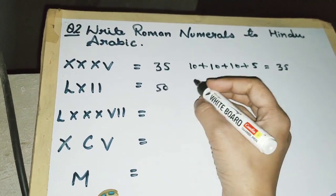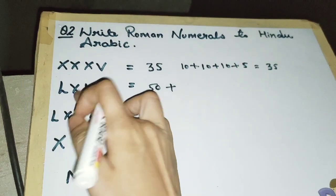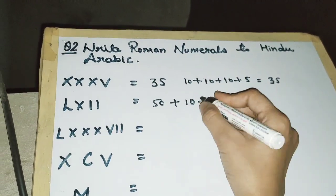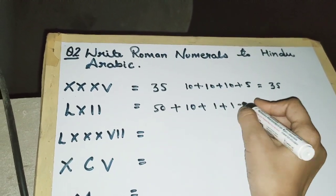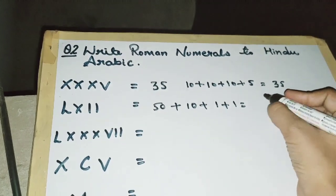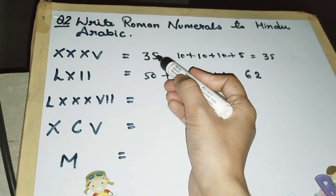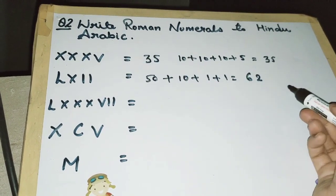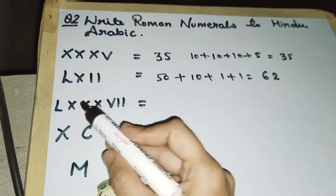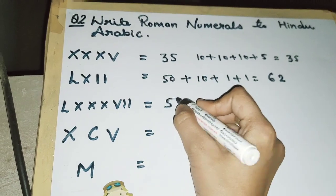or you can do it this way also. Next, L is 50, then three times 10 (10 + 10 + 10) - this is 50, 60, 70, 80 - and then V